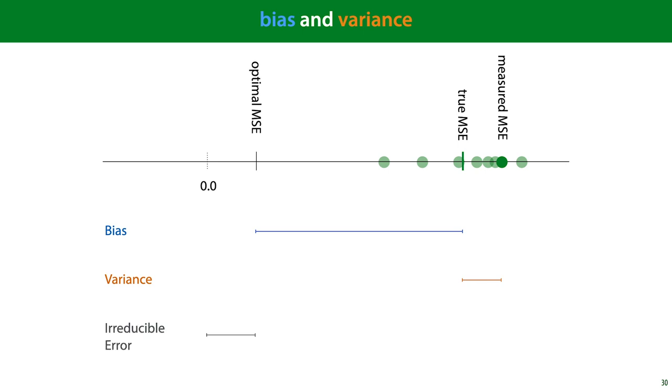Putting all this together, the MSE that we observe consists of three components: the bias, the variance, and the irreducible error. Note that for a single measured value of the mean squared error, we cannot tell how much of it is down to bias and how much of it is down to variance. We have to guess this based either on resampling of the data or on contextual clues. But what we can say in general is what different values of bias and variance look like.